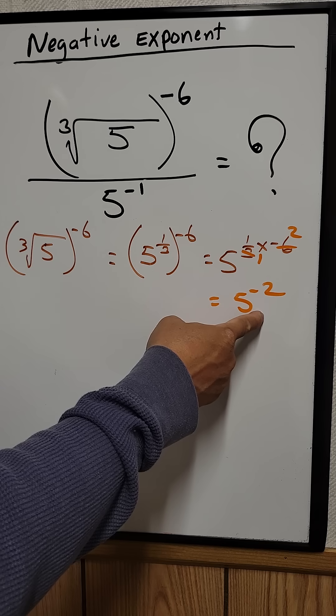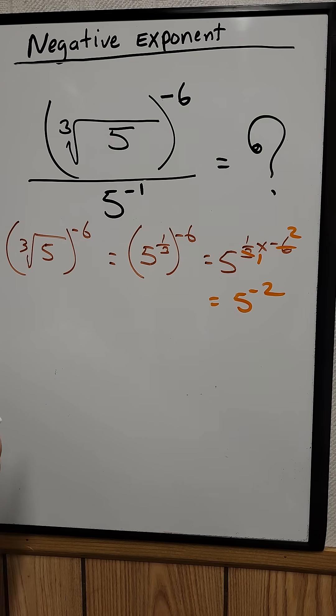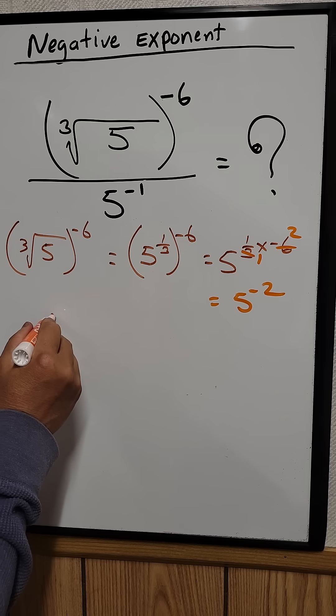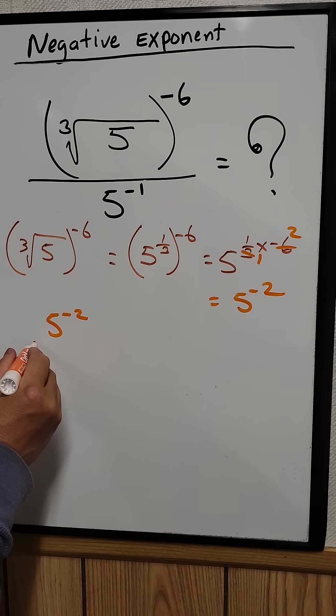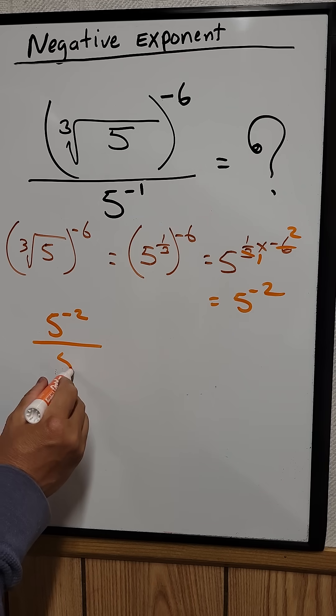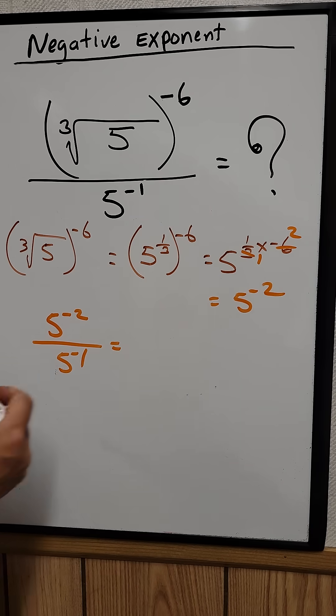Now substitute that to the top. So 5 raised to the negative 2 divided by 5 raised to the negative 1 equal to what?